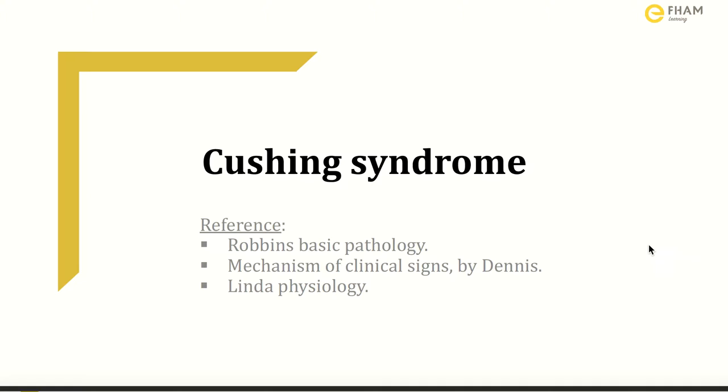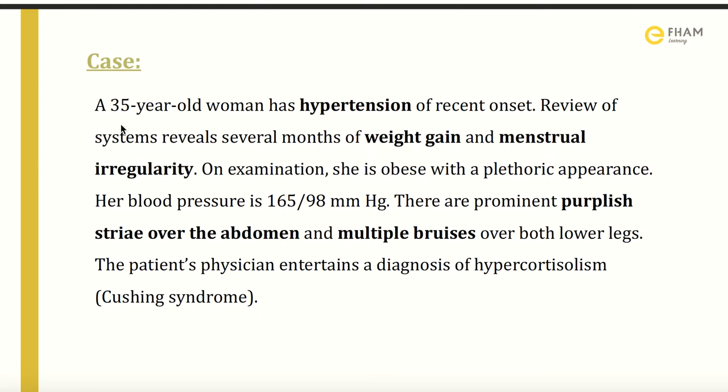Let's start with a case. A 35-year-old woman has hypertension of recent onset. Review of systems reveals several months of weight gain and menstrual irregularity. On examination, she is obese with a plethoric appearance. Her blood pressure is 165 over 98 mmHg. There are prominent purplish striae over the abdomen and multiple bruises over both lower legs. The patient's physician entertains a diagnosis of hypercortisolism, which is Cushing Syndrome.